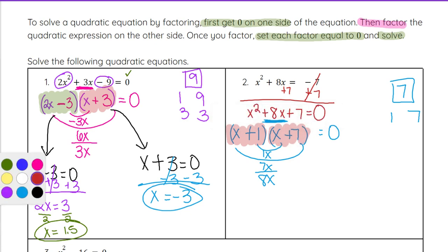We're going to set x plus 1 equal to 0, and we will set x plus 7 equal to 0 and solve. x plus 1 equals 0. x plus 7 equals 0.